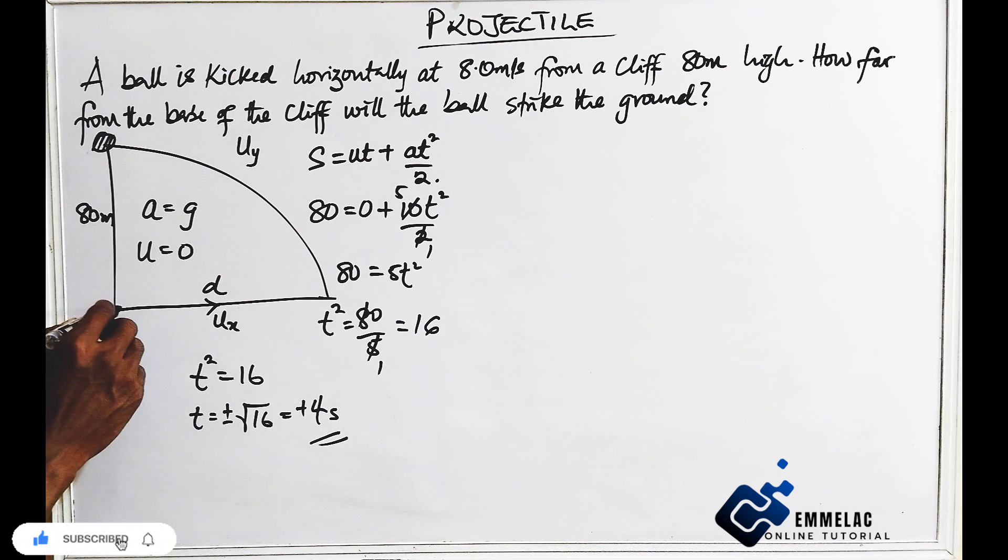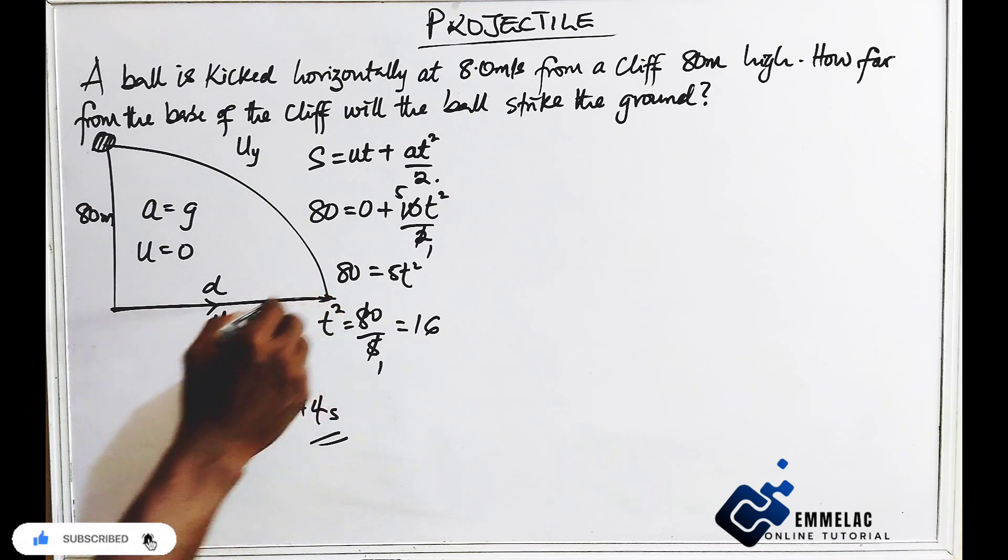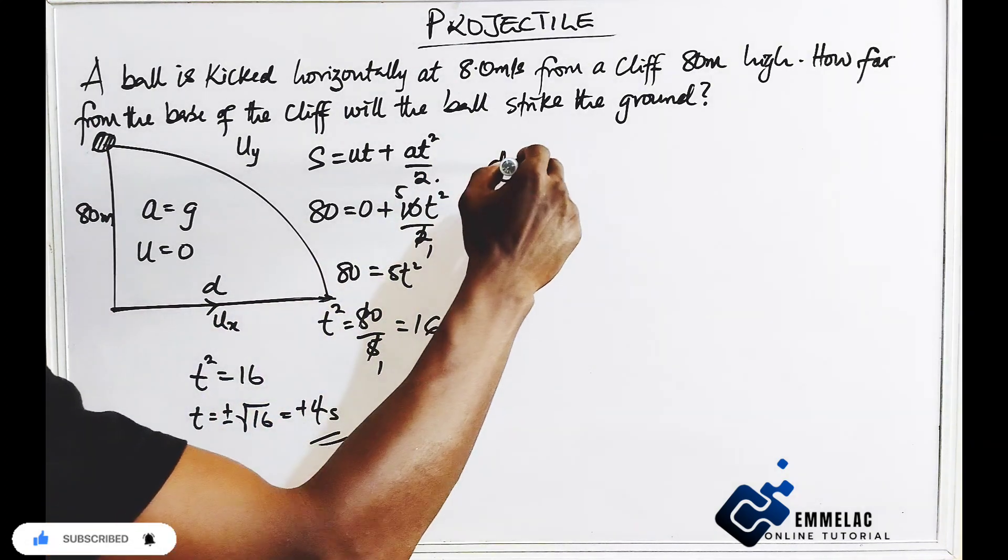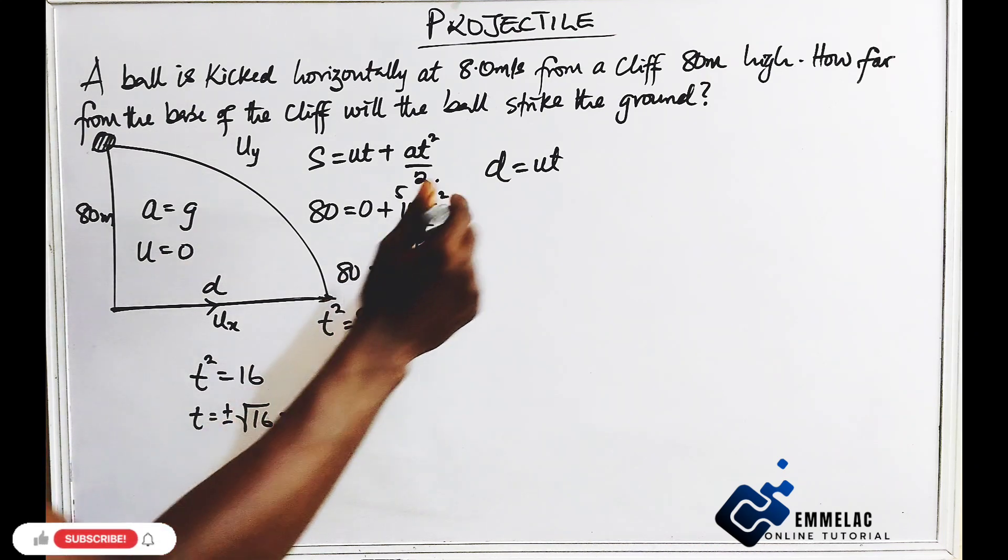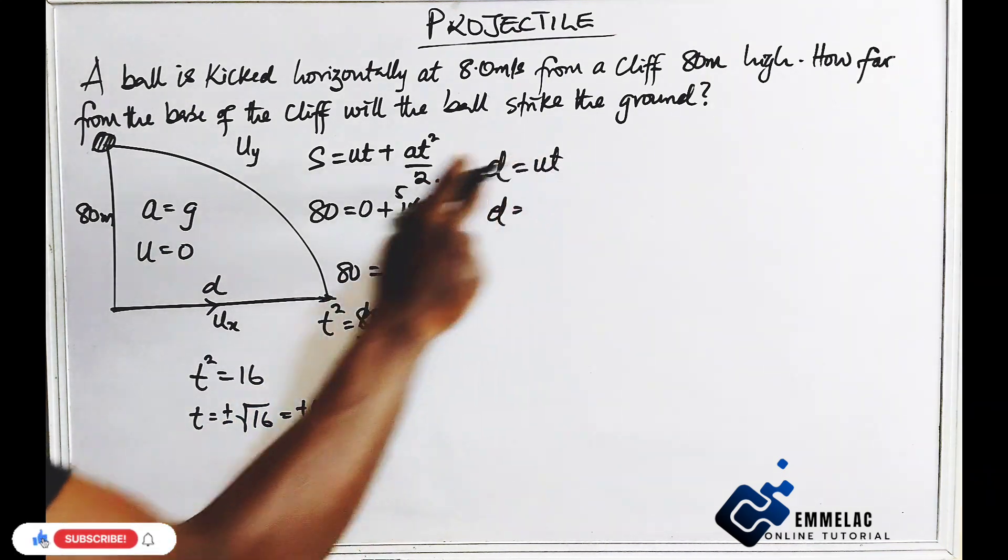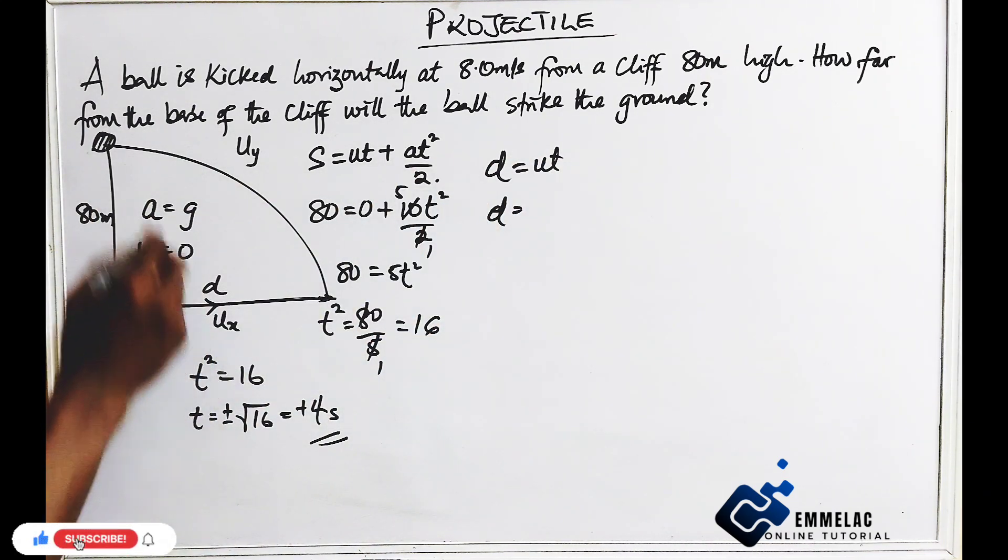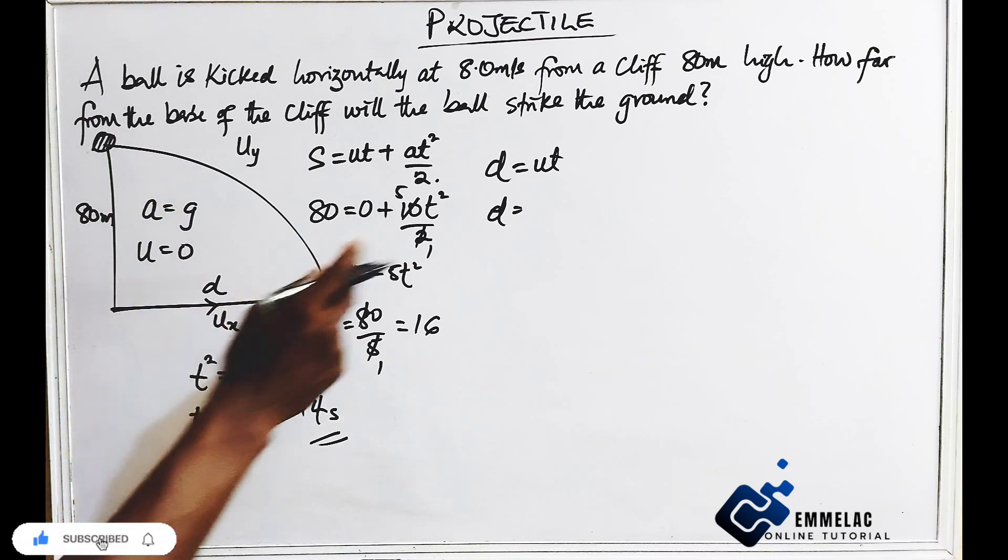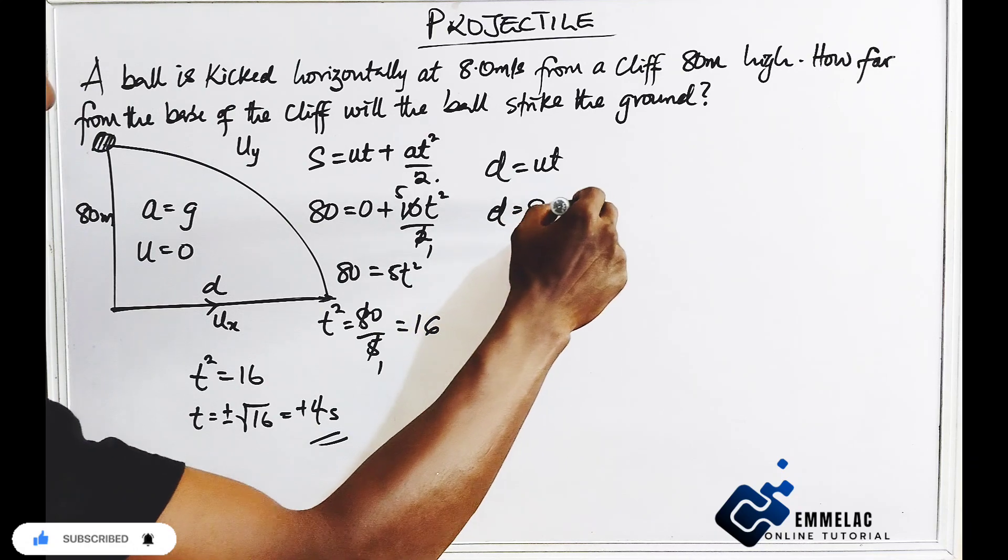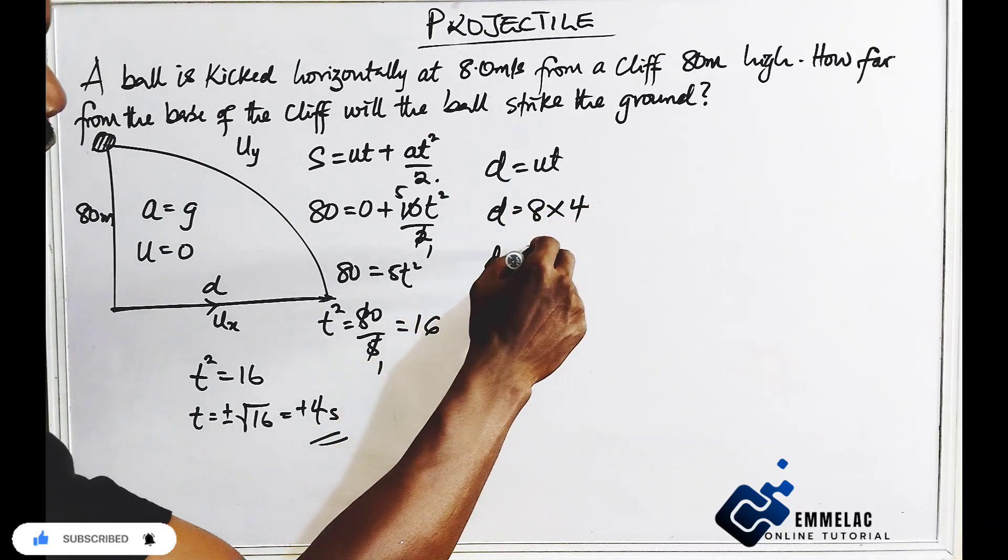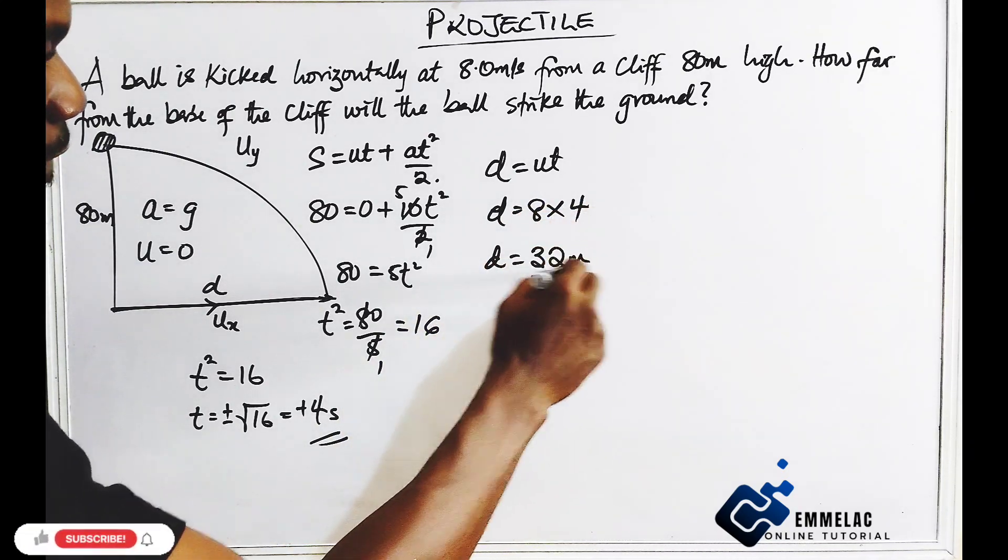Now taking note of this, from here to here the distance, the linear distance here will be giving us ut. So the distance here, our velocity is still the same, which is the same as this, that would be 8. Then times 4. So the distance here will be 32 meters.